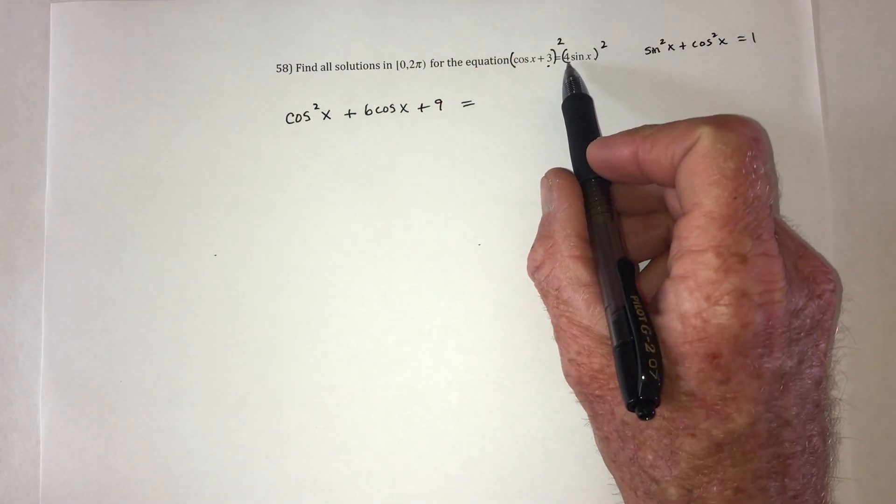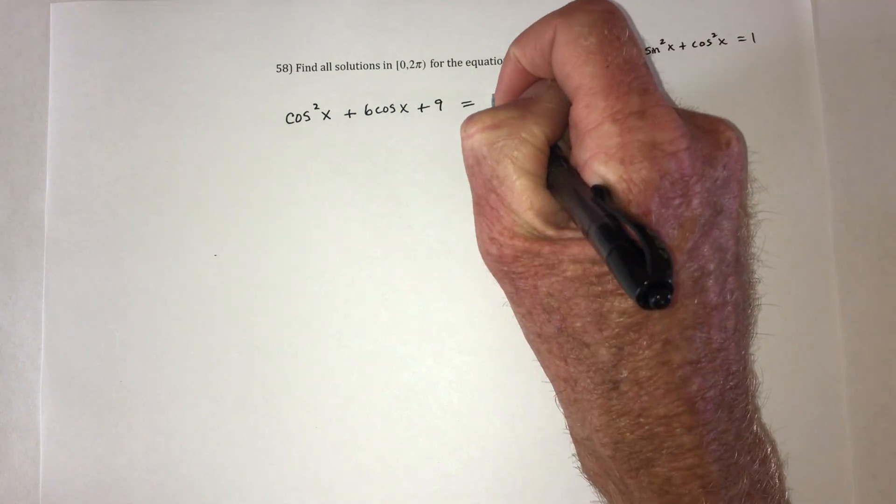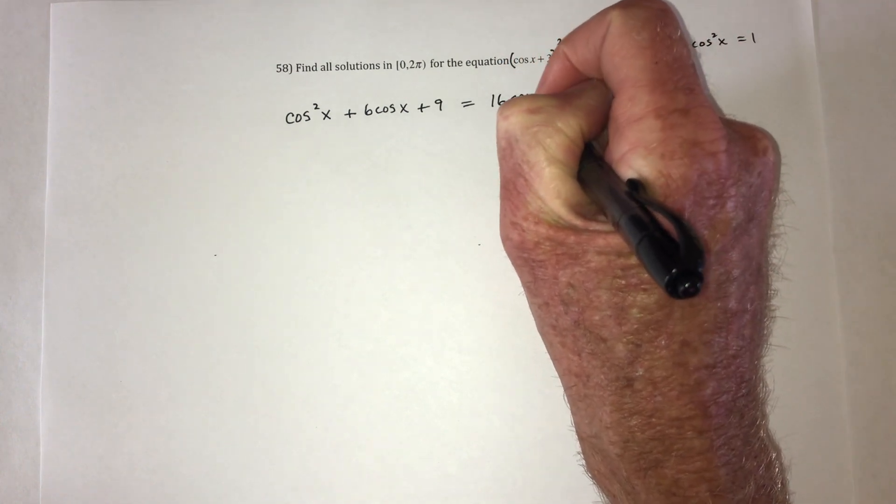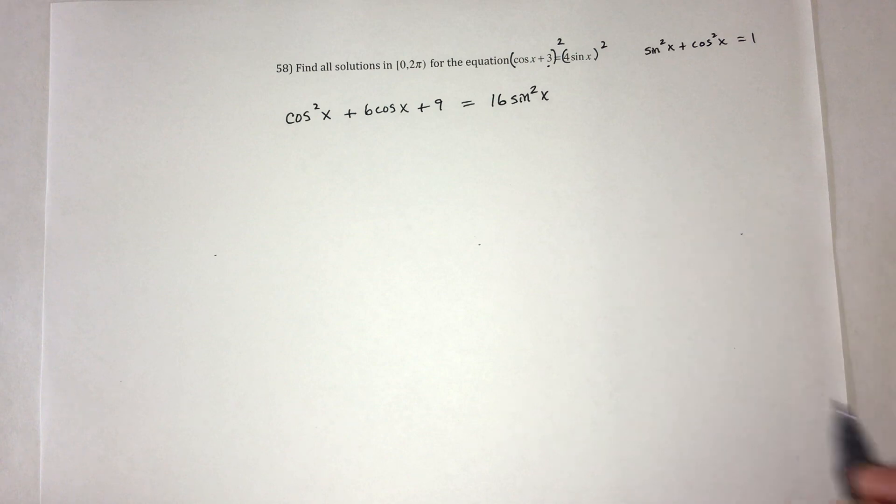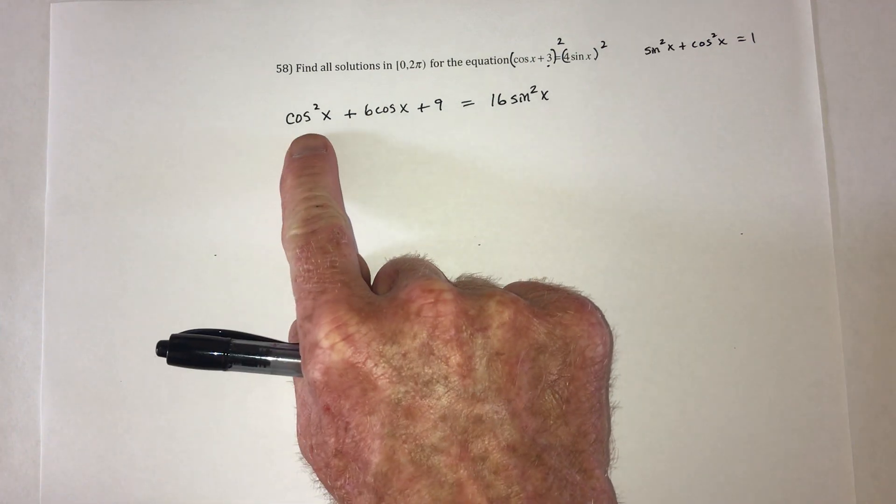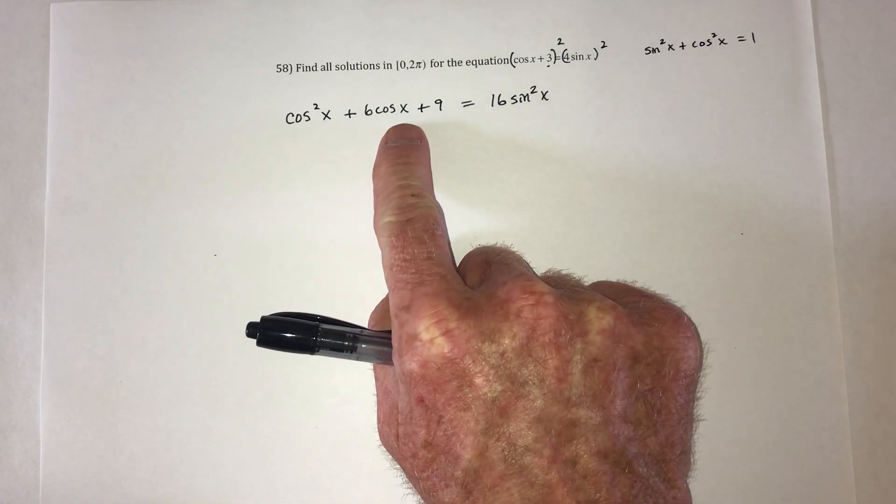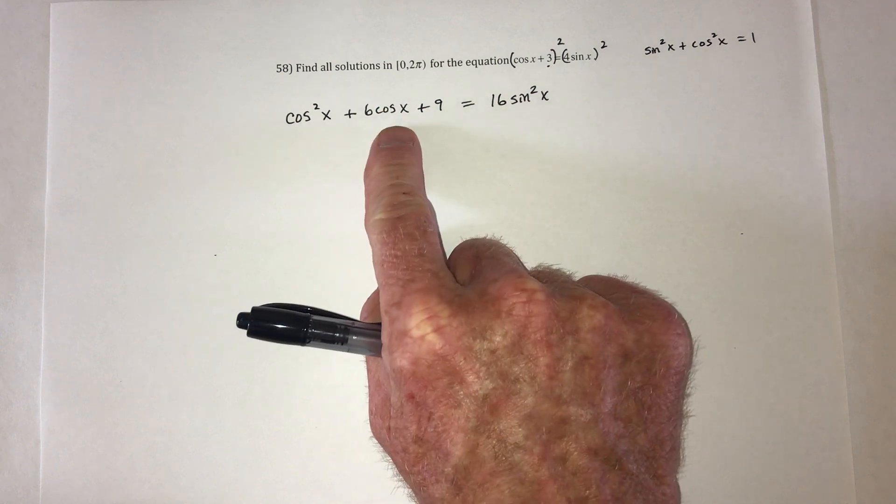On the right side, square the 4 and also square the sine. Now notice over here, everything has cosine, well, other than the 9, but cosine is dominant.